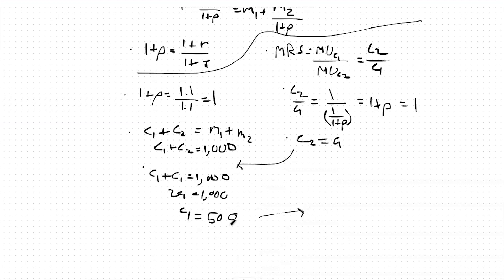If c1 equals 500, c2 also equals 500. These would be our preferences for consumption today and consumption tomorrow.